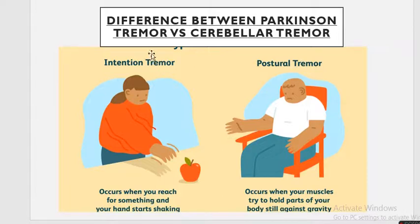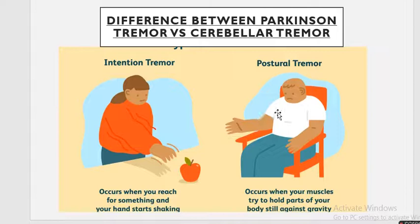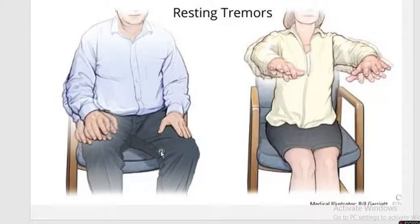What's the difference between Parkinson's tremor and cerebellar tremor? Parkinson's develops on resting, but in the cerebellum it develops as an intention tremor — that is, when the patient is trying to reach for something and flex or extend the hands, they develop tremors. A cerebellar lesion leads to intention tremor.